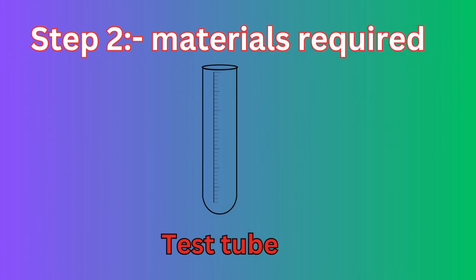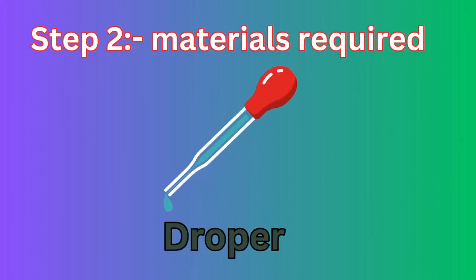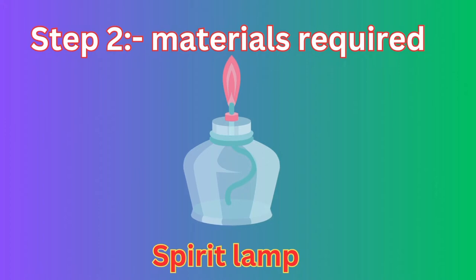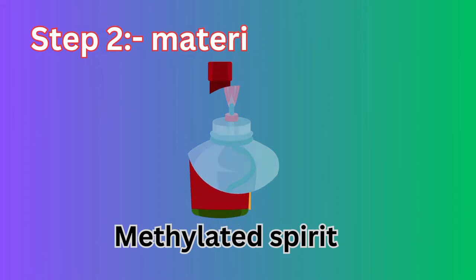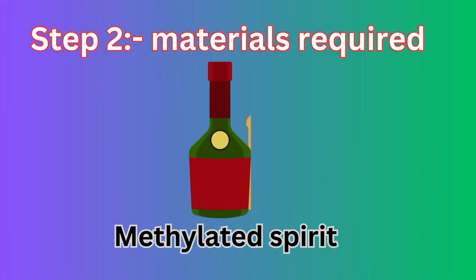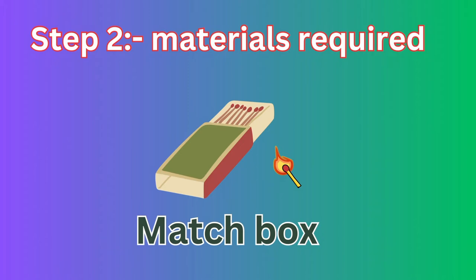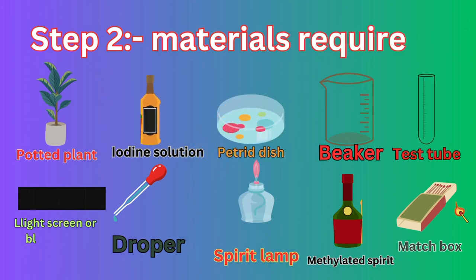Next, a test tube — in which we keep methylated spirit and the leaf. A dropper — to apply iodine solution on the leaf after boiling. A spirit lamp — to boil the beaker water. Methylated spirit — to boil the leaf in the test tube. A matchstick to start boiling, and water is also required.